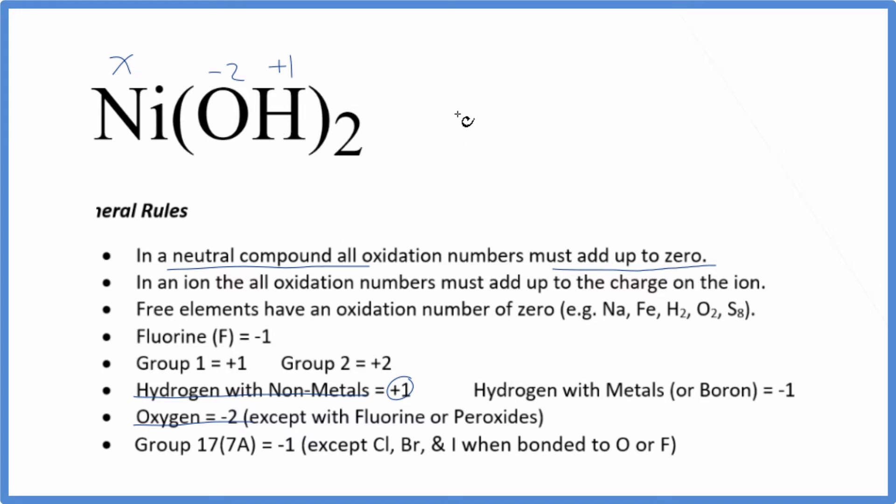We can set up an equation: X plus -2 times the 2, so that's -4, plus 2 times the +1, that's +2, all of that equals 0. So X - 2 = 0. Add 2 to both sides.